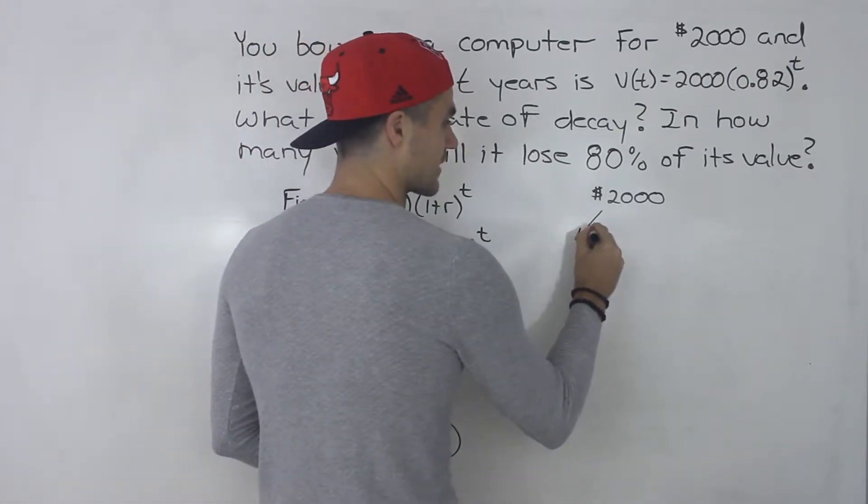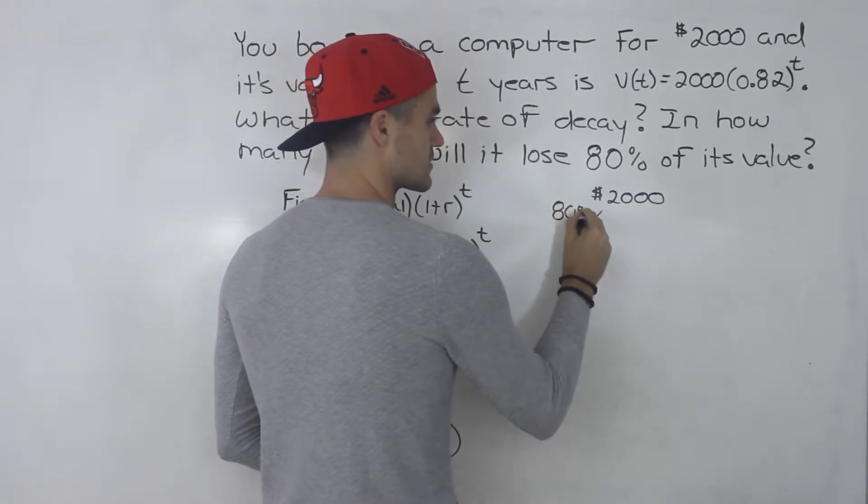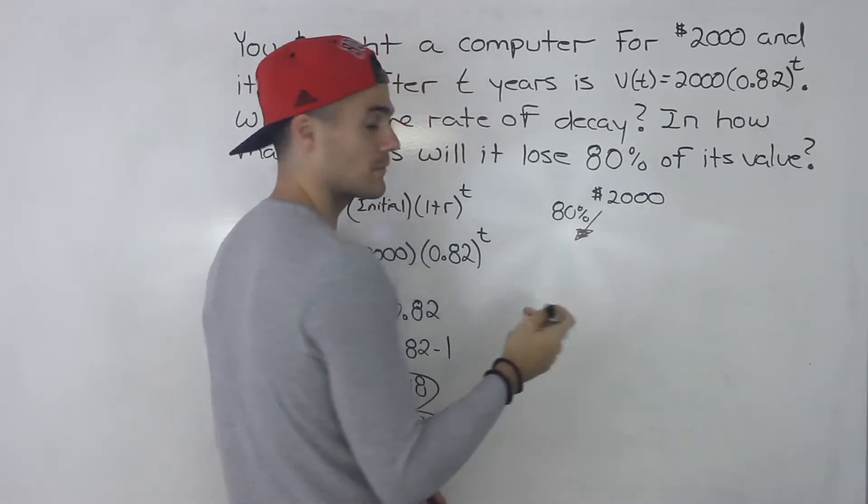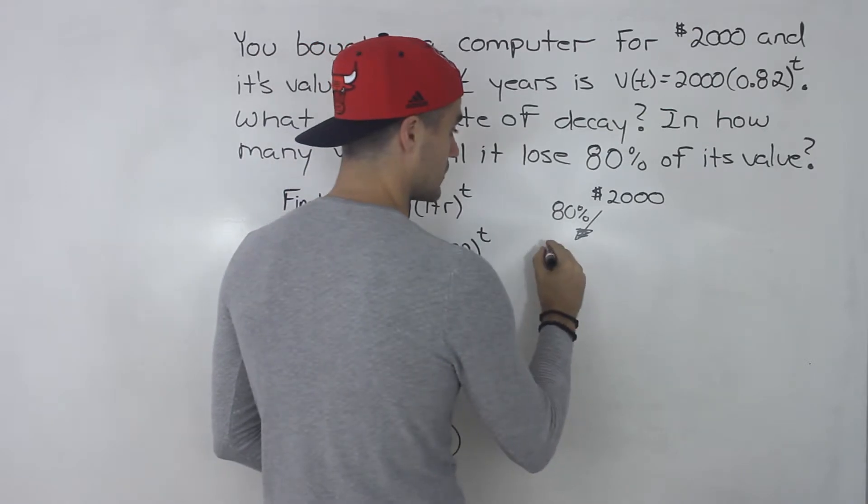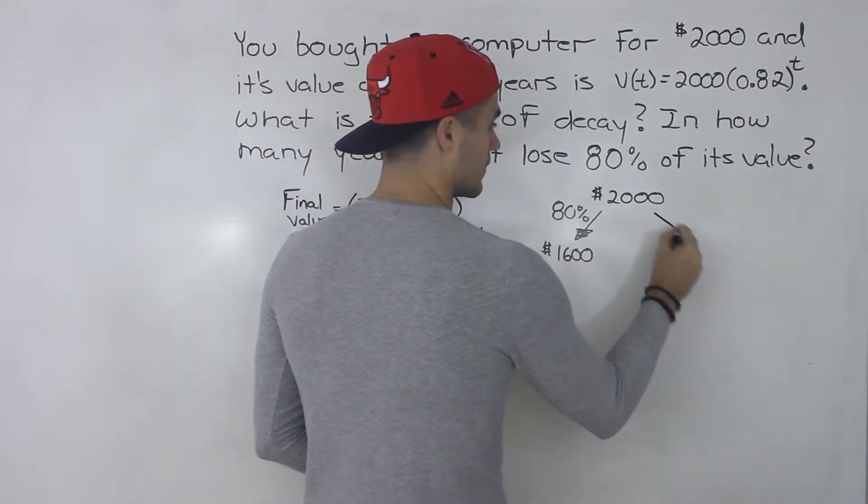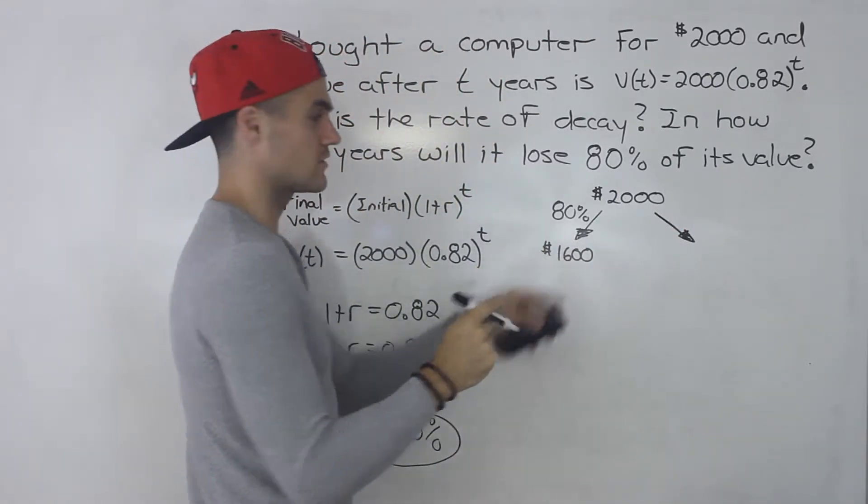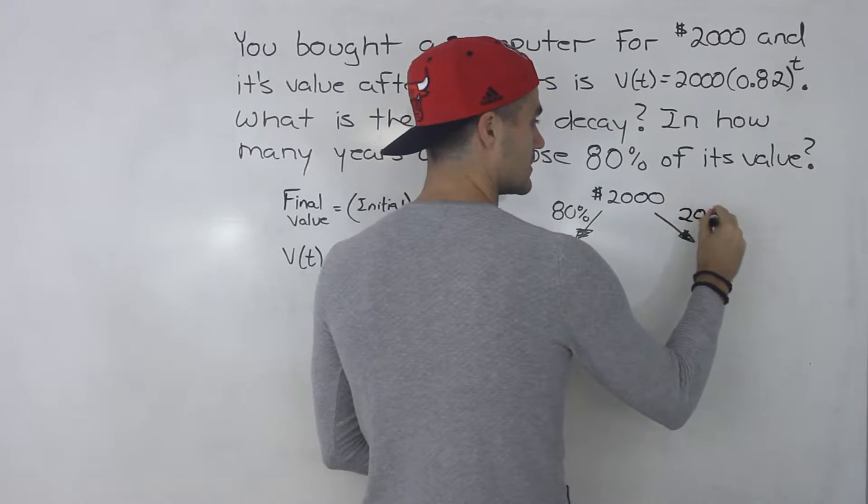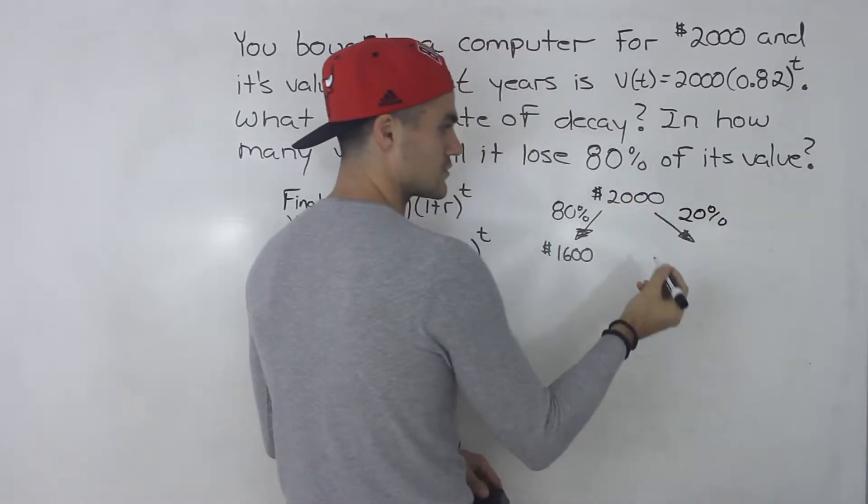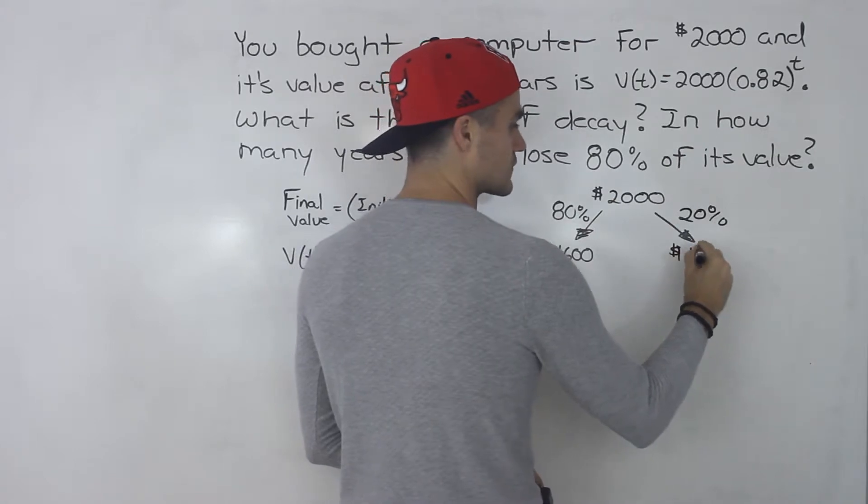So 80% of 2,000 is going to be what? If we take 2,000 multiplied by 0.8 that would give us 1,600. Which means if it loses 80% of its value only 20% is going to be left. So 20% of 2,000 is 400. 0.2 times 2,000 gives us 400.